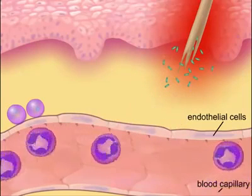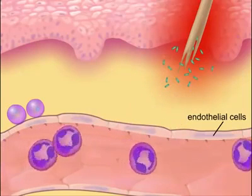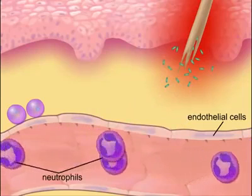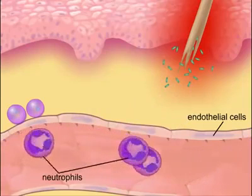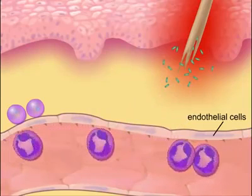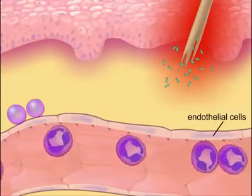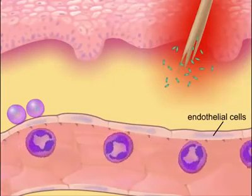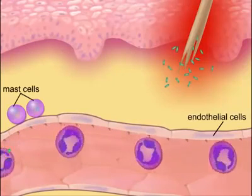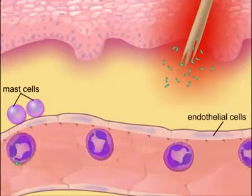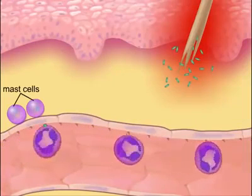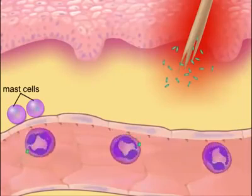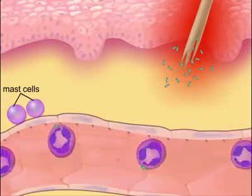These adhesion molecules attract neutrophils, slow them down, and cause the neutrophils to roll along the endothelium. As the neutrophils roll along the endothelium, they encounter chemicals that activate integrins, which are adhesion receptors on their surfaces.